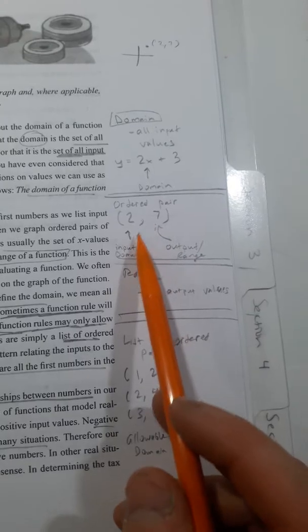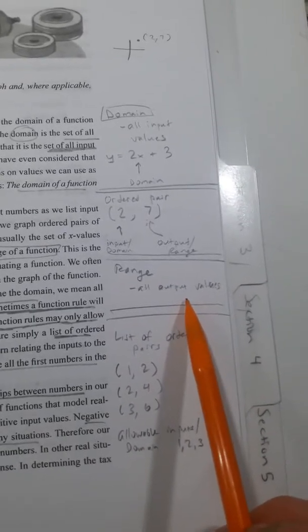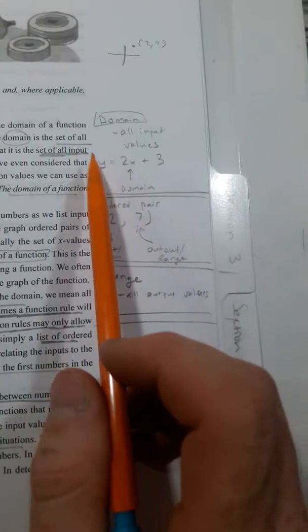So that's what an ordered pair is. Remember, the first number is the input or the domain. Range is all output values. So whatever y could be.